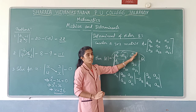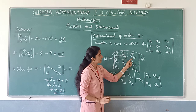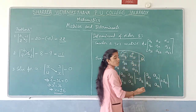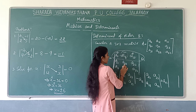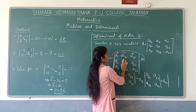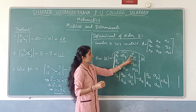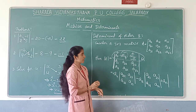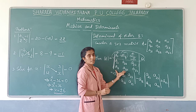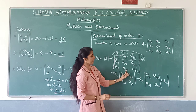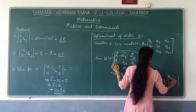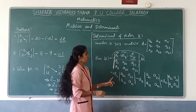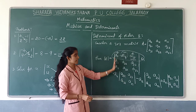Now move to the third element A13. The sign is plus, so it is plus A13 into the determinant of order 2. We delete the row containing A13 and the column containing A13. What remains is A21, A22, A31, A32. Write that as the second-order determinant to be multiplied with A13.